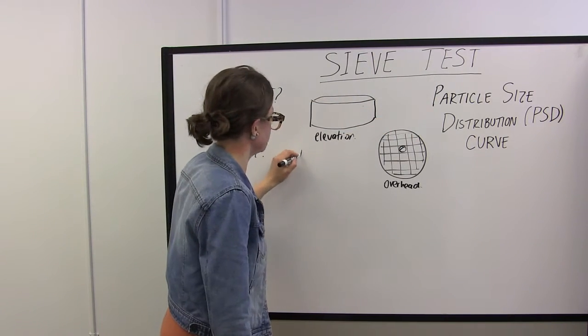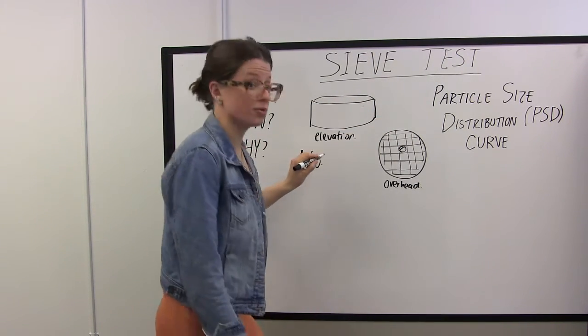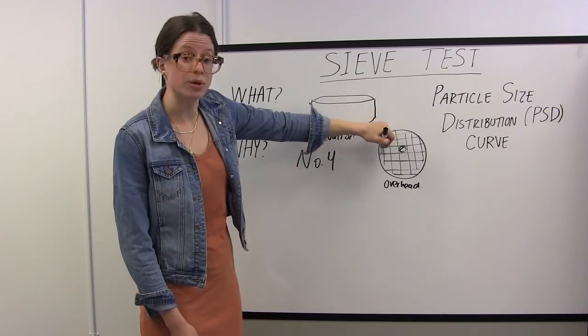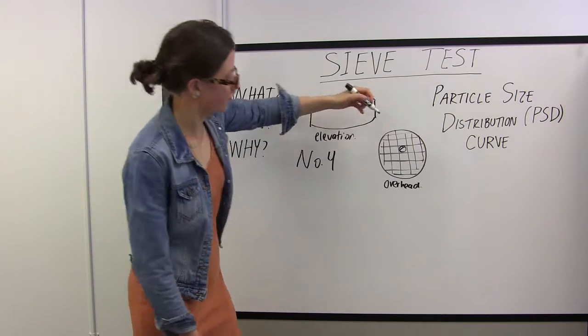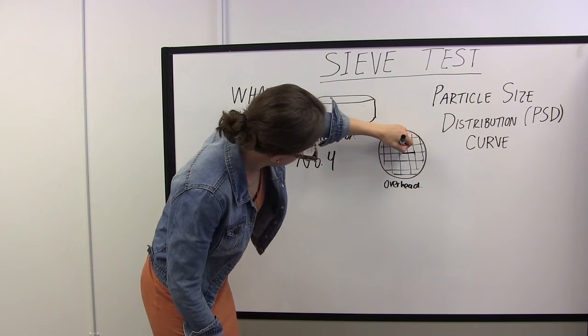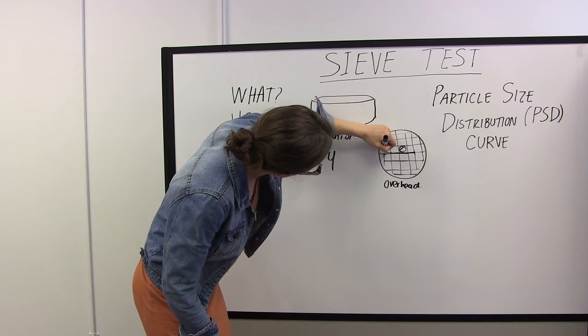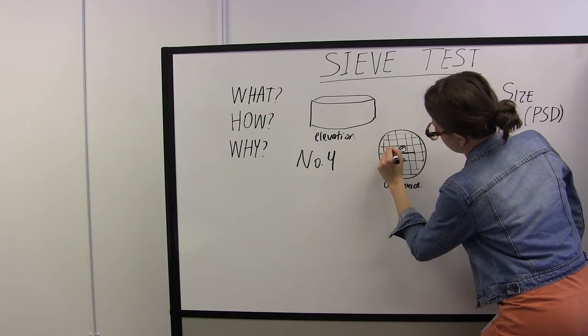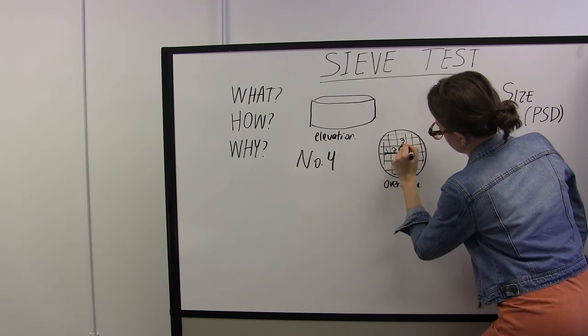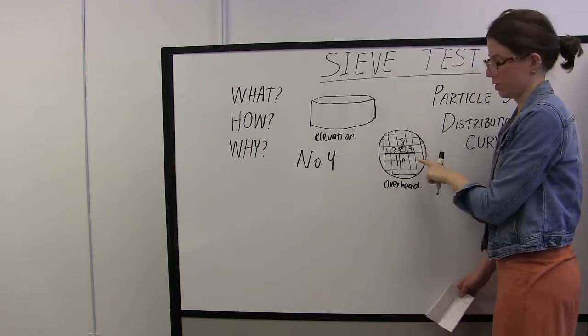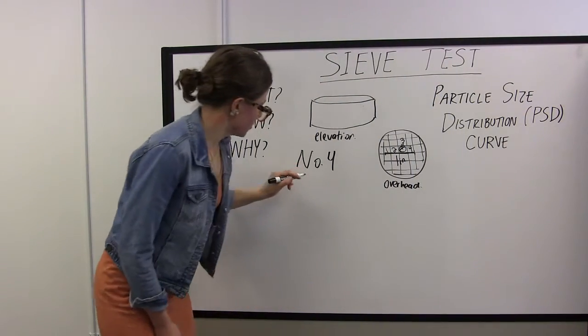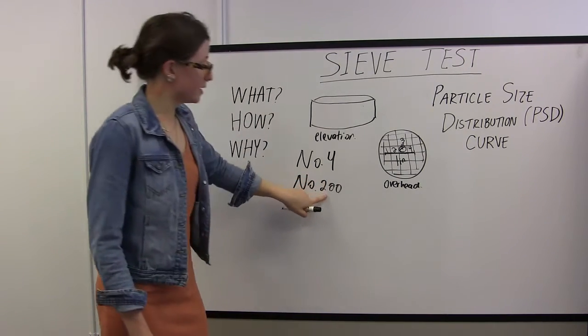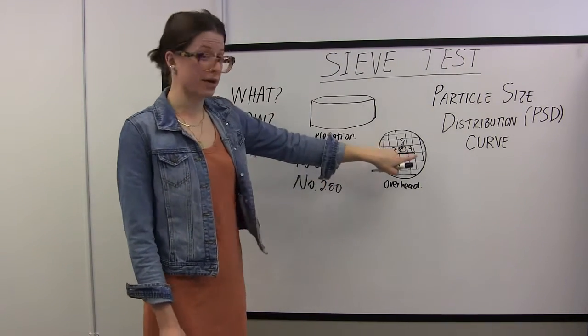For a typical sieve, we have one called the number four. This four means that there are four openings per inch looking into the sieve. So in this example here, this would be one inch, because we have one, two, three, four sieve openings. As another example, there's one that's called the number 200 sieve. This has 200 openings per inch to it.